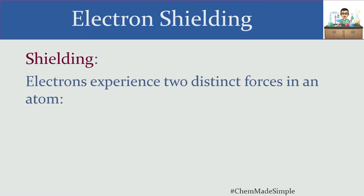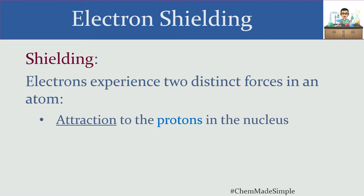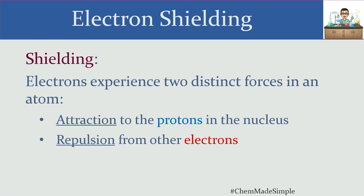What is shielding? When you take a look at electrons that exist inside an atom, they experience two distinct forces. One of them is an attractive force and one of them is a repulsive force. The attractive force is due to the protons that exist on the nucleus — protons with a positive charge that is attractive to those electrons — and they experience repulsion from other electrons. So let's take a look at that dichotomy, the attraction and the repulsion, separately.